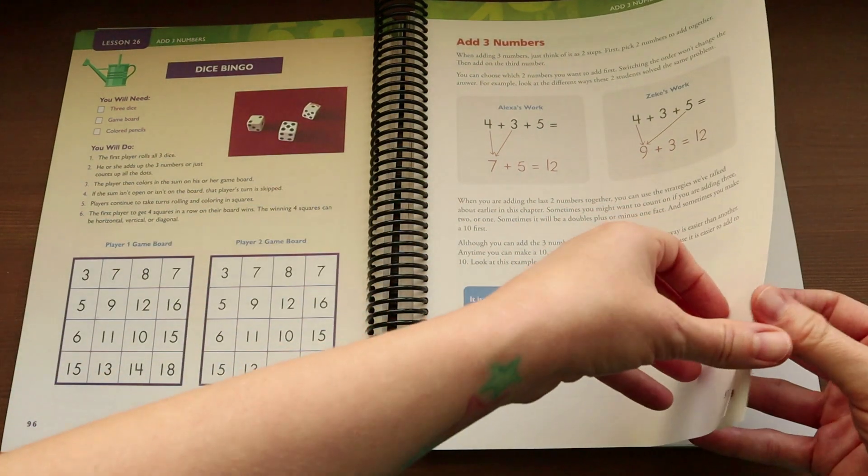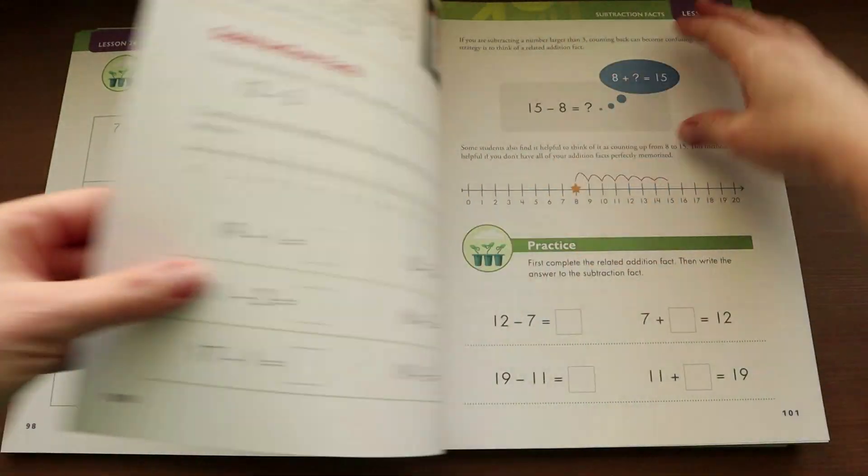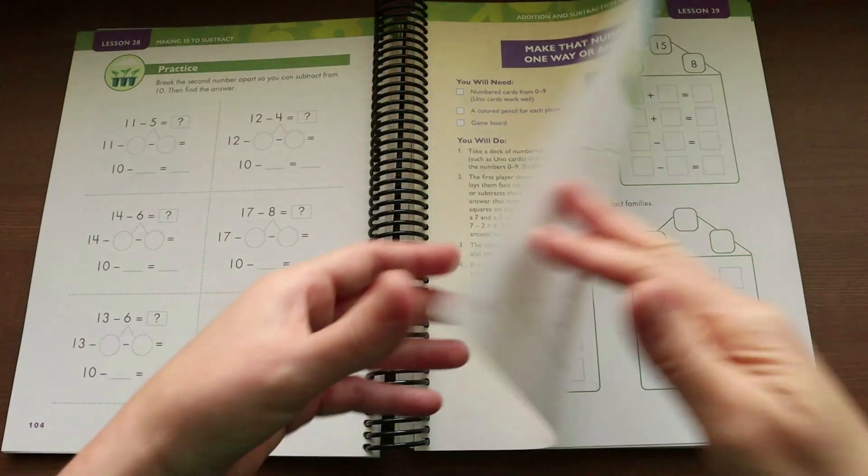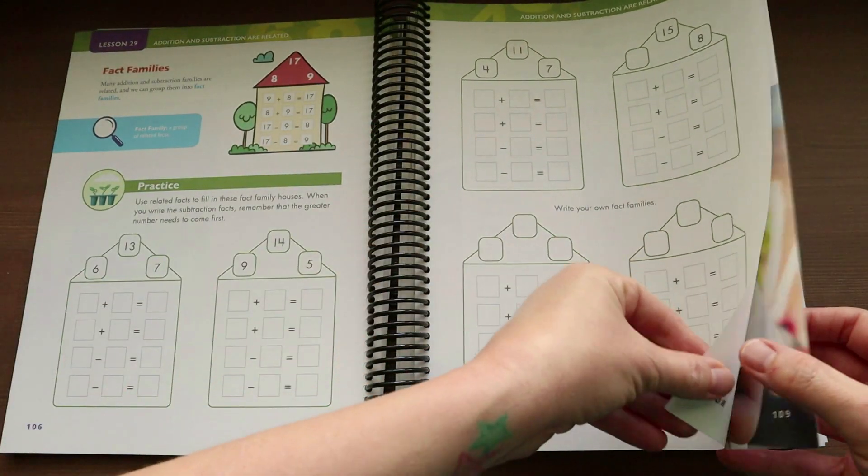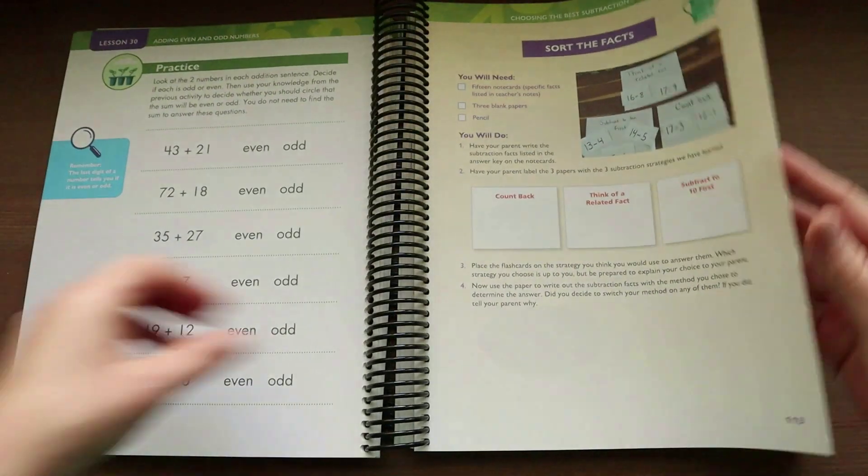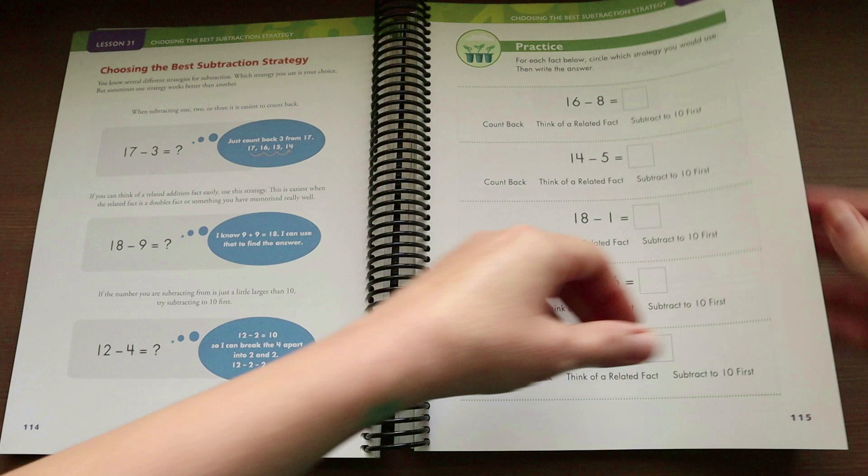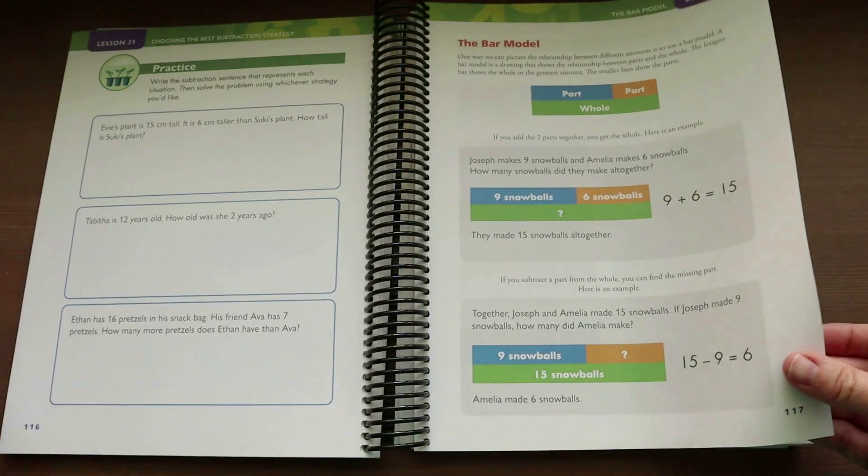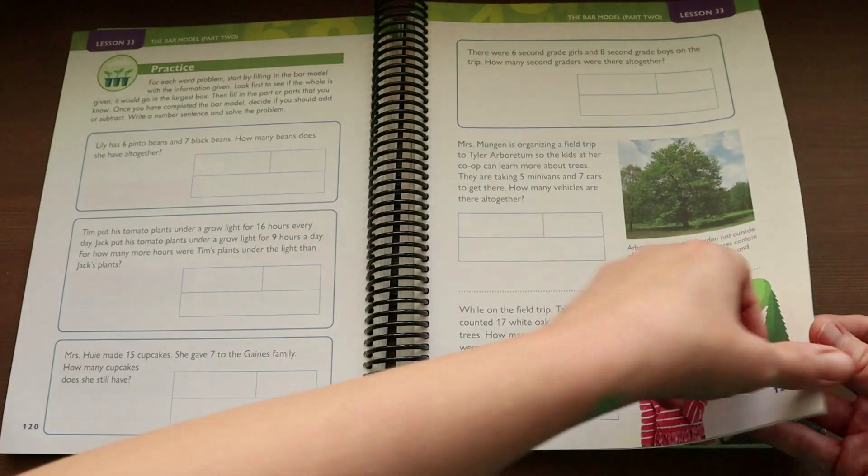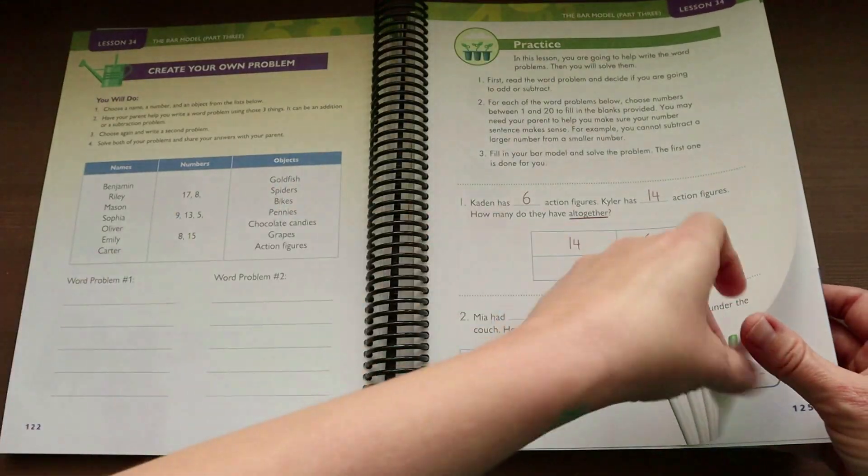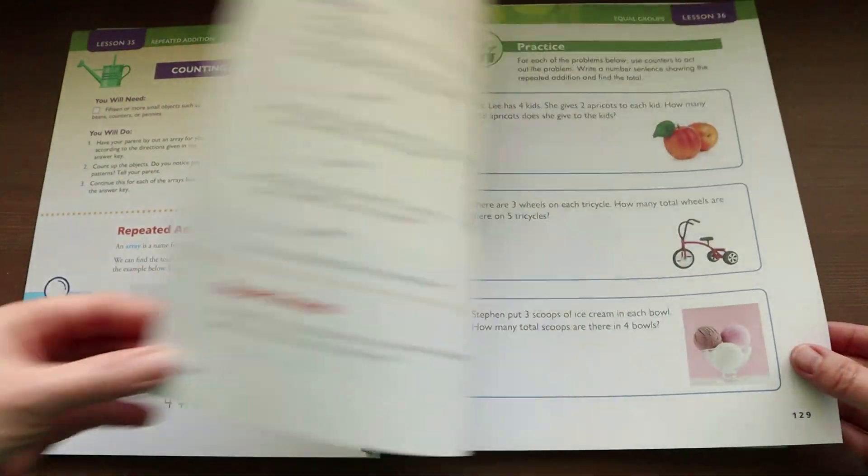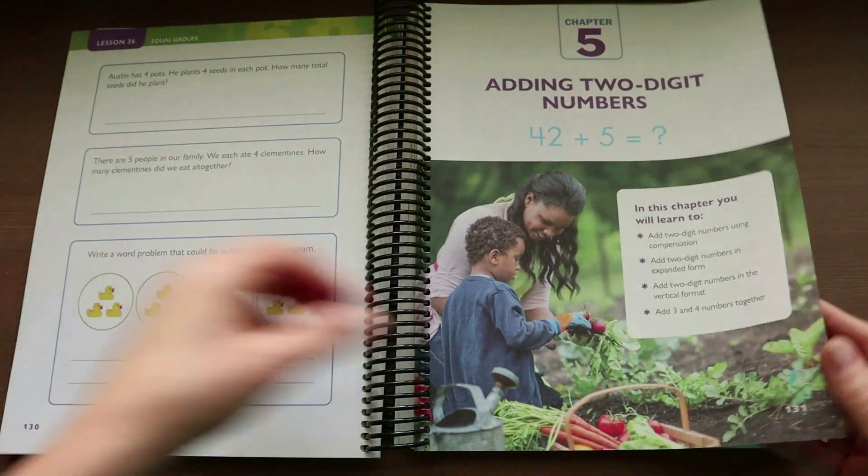As far as supplies needed, most will be common household items however there are a few things that you'll need to purchase such as linking cubes, base 10 blocks, a set of 3D shapes and pattern blocks and the occasional food item. There are some activities that incorporate food so just be prepared for that so you can have those on hand when the time comes for that lesson.